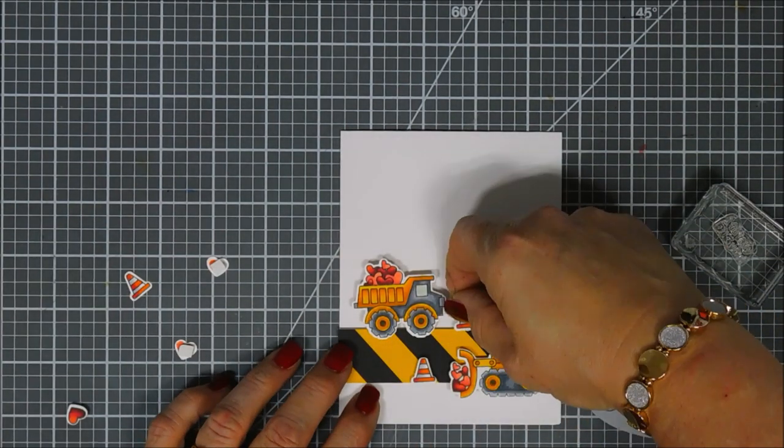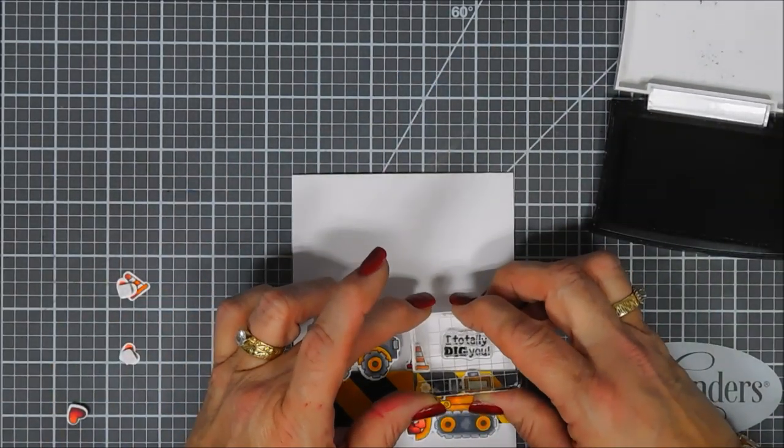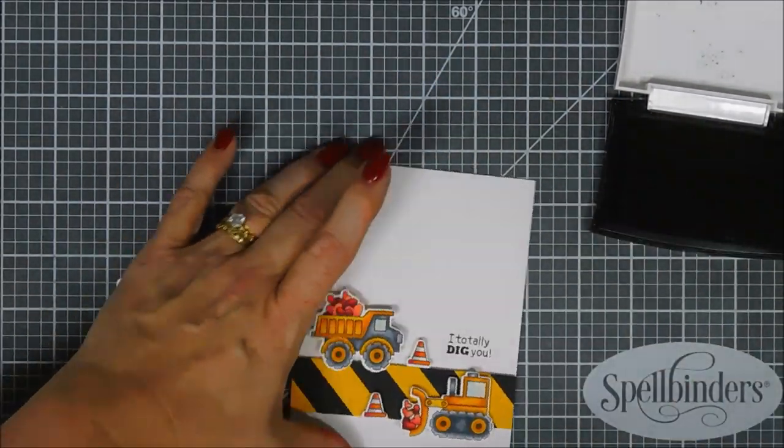And then we'll go ahead and stamp our sentiment. I'm going to stamp it with my VersaFine Onyx Black ink. It's a very black ink - I think it goes really well with the stripes there.